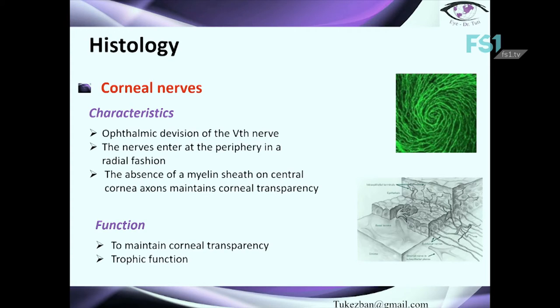Regarding corneal nerves: the ophthalmic division of the fifth nerve provides the innervation of the cornea. The nerves enter at the periphery in a radial fashion, and the absence of a myelin sheath on the central corneal axis maintains corneal transparency — as already mentioned. The main functions are trophic function and participation in corneal transparency. Importantly, neurons release diffusible factors that stimulate corneal epithelium growth, which is very important for proliferation and differentiation of the cells.